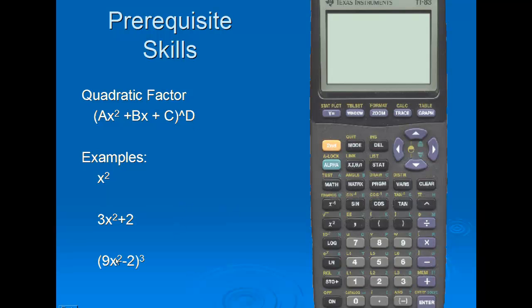Looking at our last example, the quantity 9x squared minus 2 cubed: the coefficient for x squared, a, is 9. We don't have a first degree coefficient, so we put in a fill of 0. c is 2, and d, which is the power, is 3. This is still considered to be a quadratic factor.